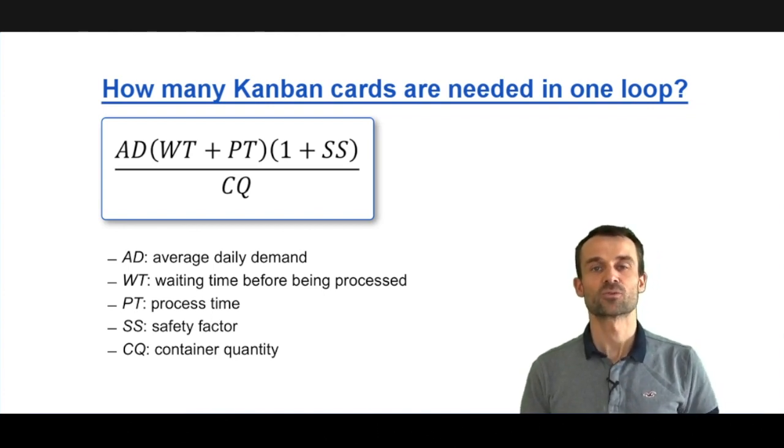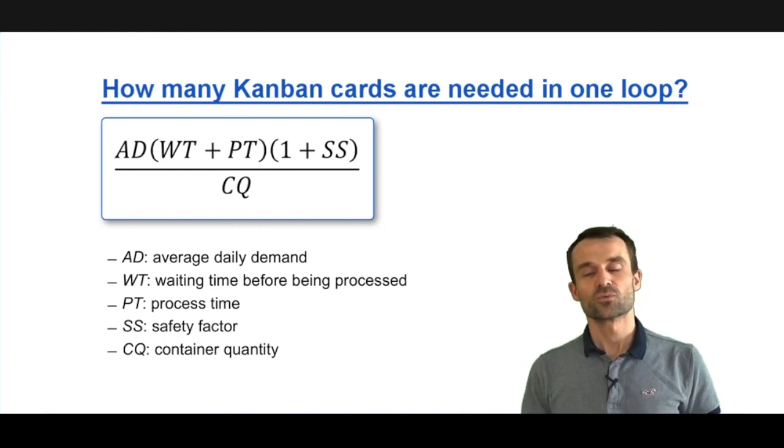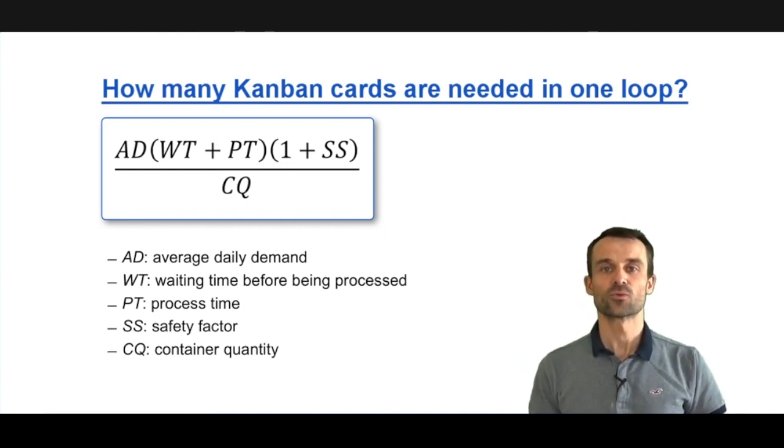We of course aim for a lot size and container quantity of one, but in many cases we have to batch and our container quantity will be more than one. So AD over CQ, that's our flow rate.